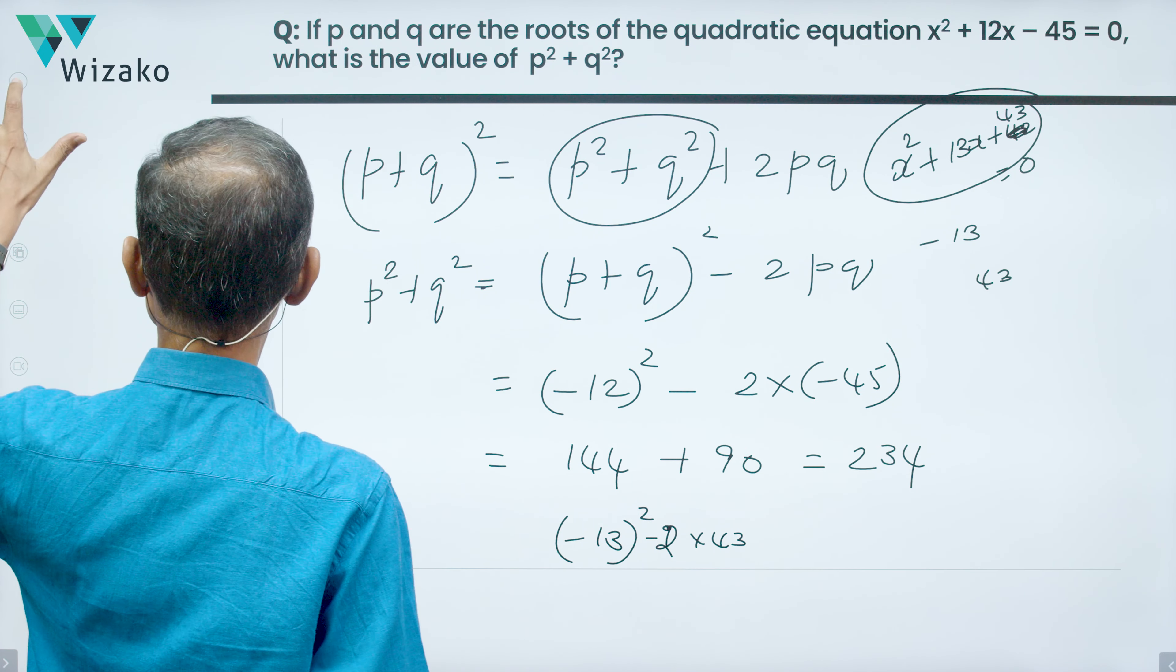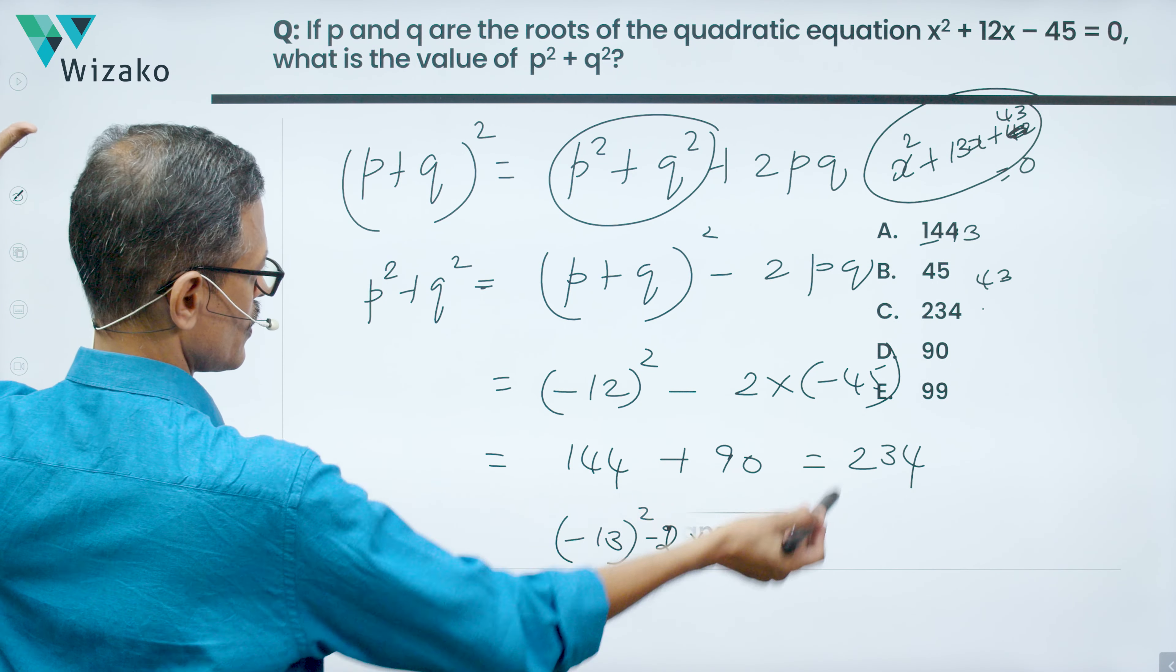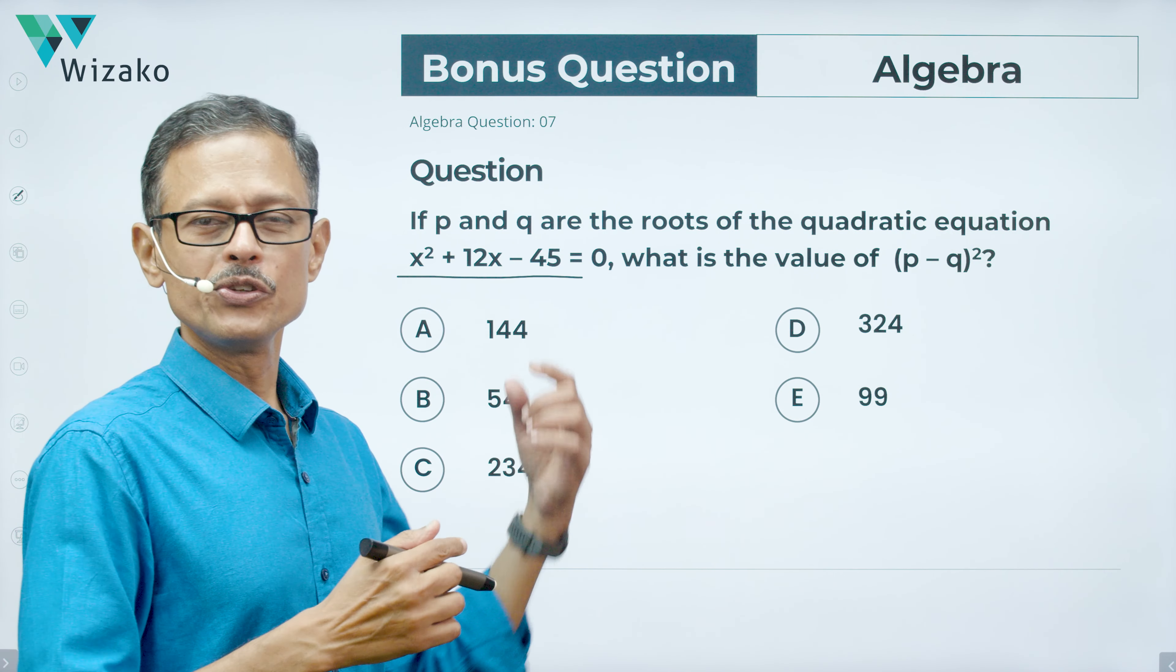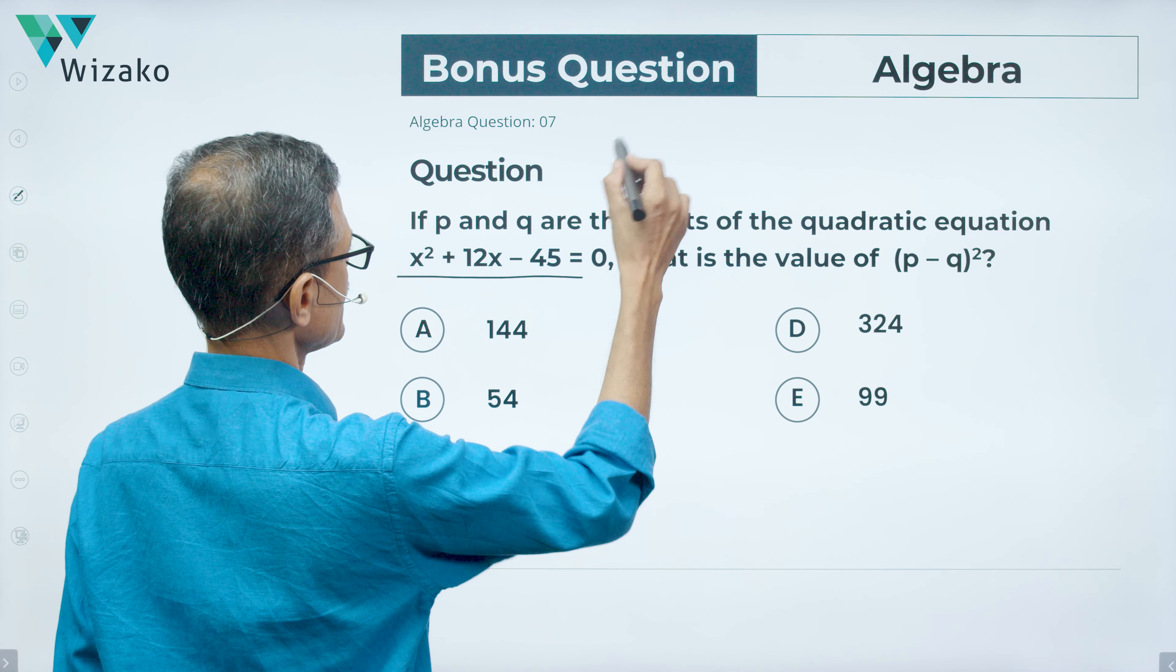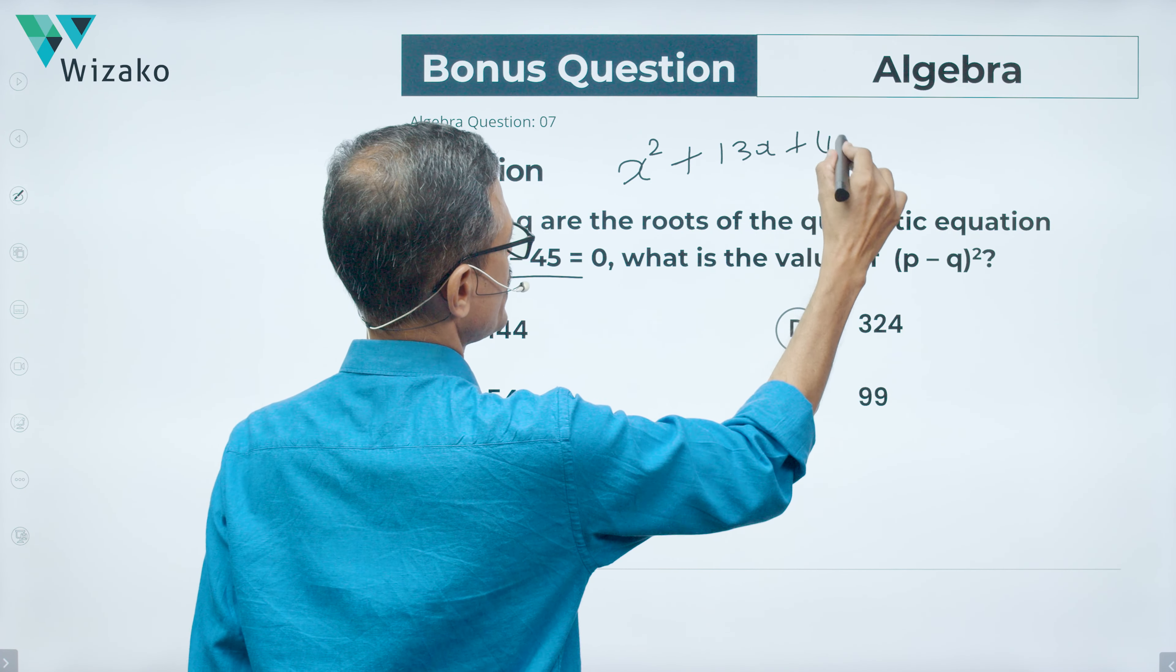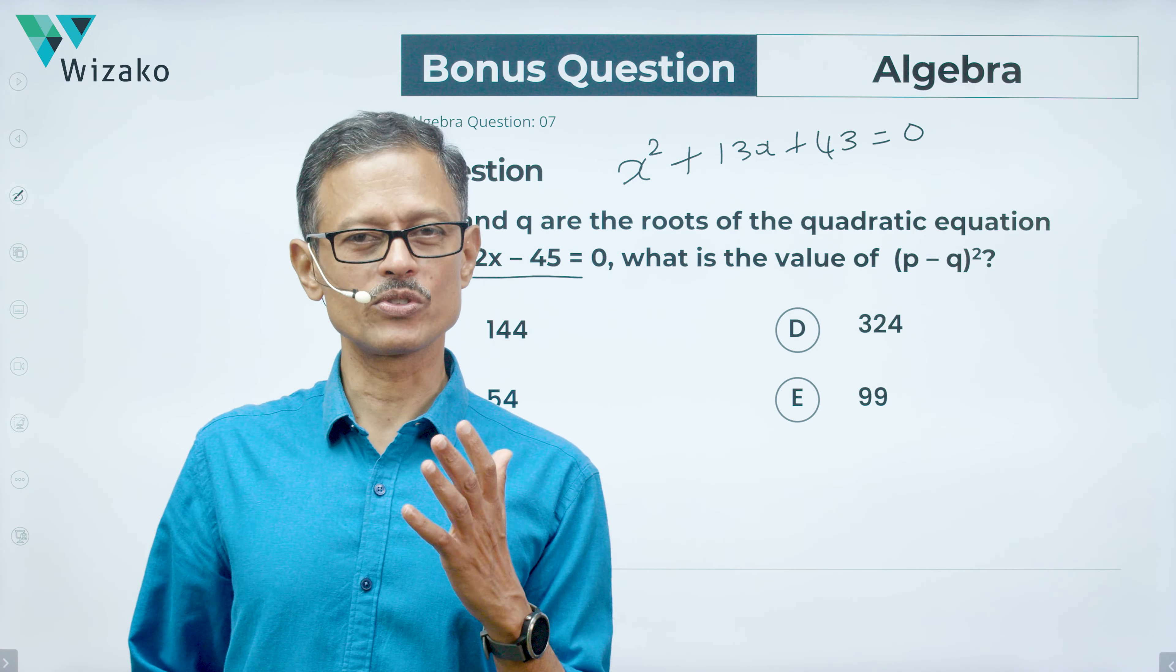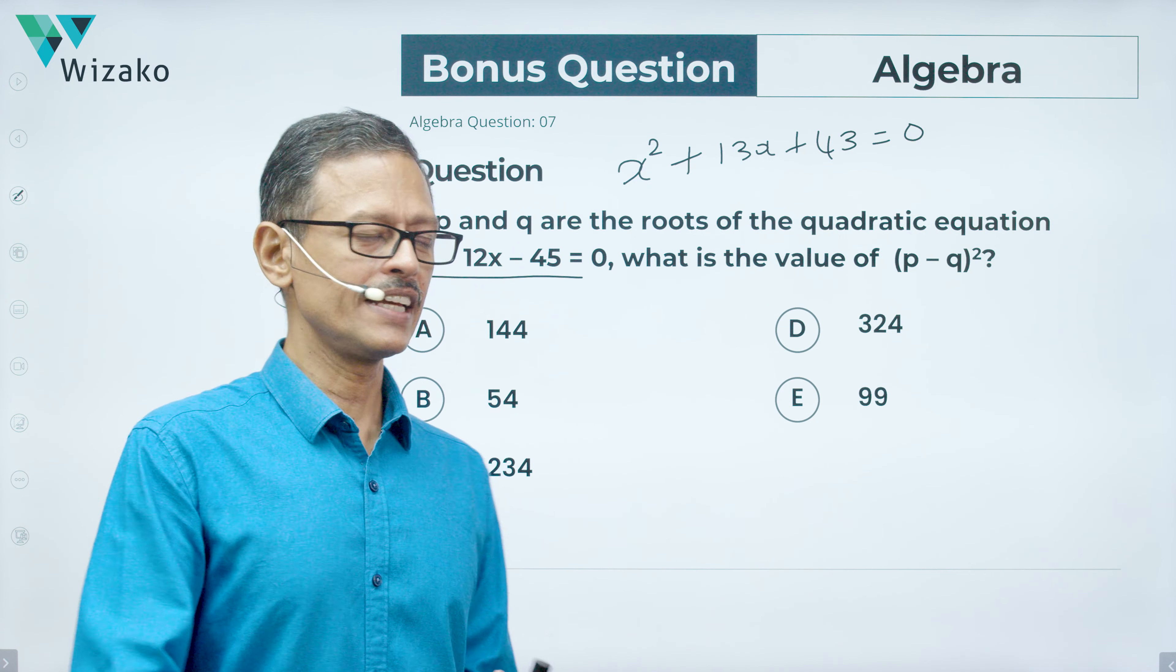Having known why we did the second method and how to go about the second method, I'm going to leave you with a bonus question. I've not changed, the answer is 234, right? I've overwritten on that space. Choice C is the correct answer. If p and q are the roots of the quadratic equation, I've not changed it here. You could try this question and you can also try a variant where you can take something like x² + 13x + 43 = 0. You can try this as a second bonus question. What is the value of (p - q)²?